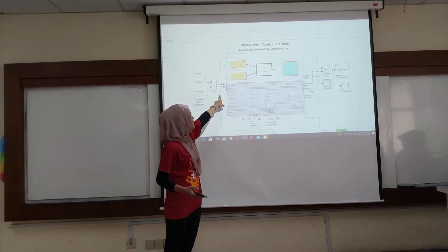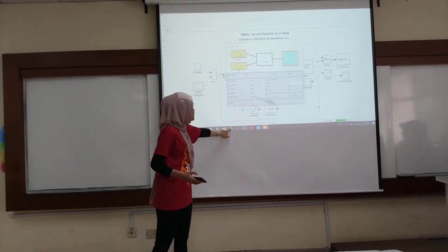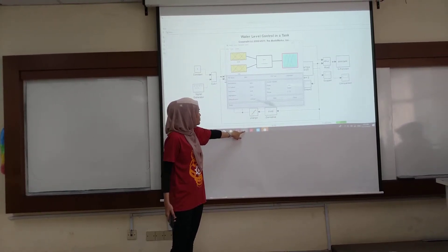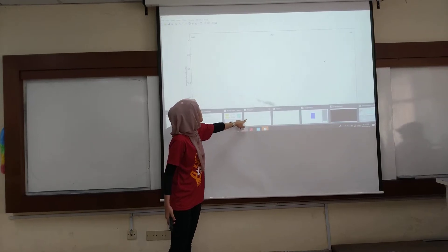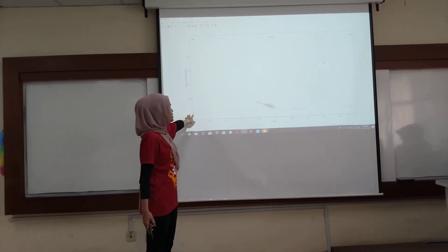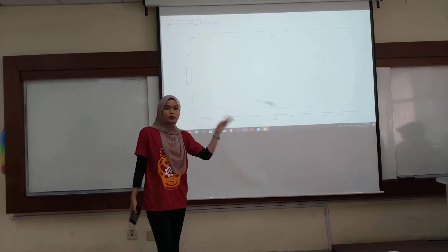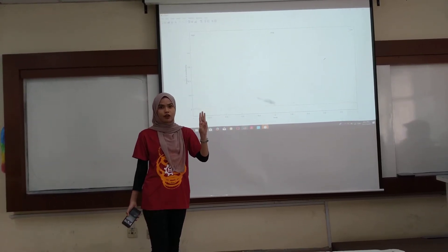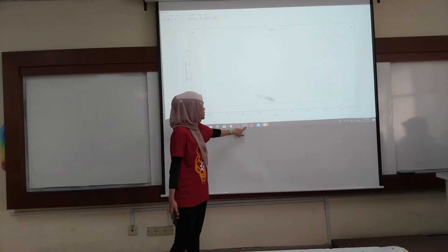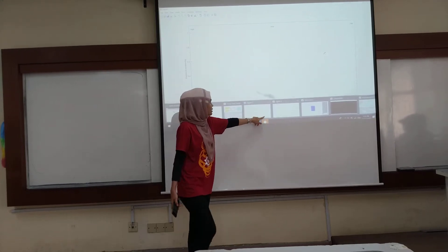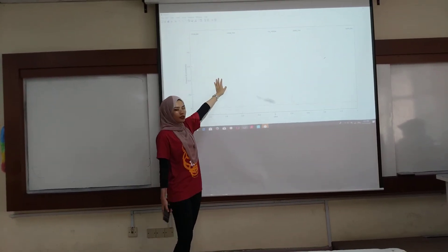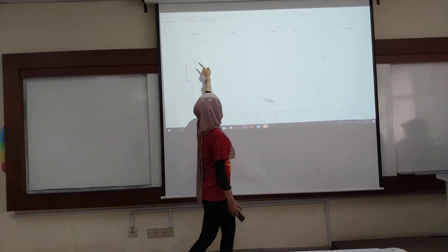This is the fuzzy logic design and this is the input diagram. This is for input 1. We have the degree of membership — we have 3 membership functions. Both inputs have 3 degrees of membership, but the output has 5 degrees of membership. All of the membership functions can be changed, including their names.